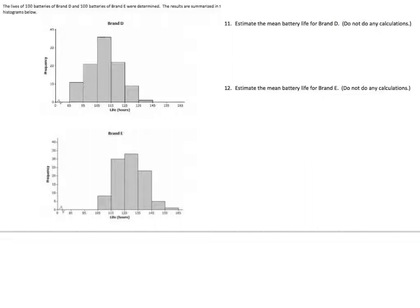First, we are going to estimate the mean battery life for D. The lives of 100 batteries of brand D and 100 batteries of brand E were determined. The results are summarized in the histograms below. So, first of all, let's estimate the mean battery life for D. Don't calculate. But it looks, I mean, that's a very symmetrical histogram. So, I'm going to say it's right there, about 110.